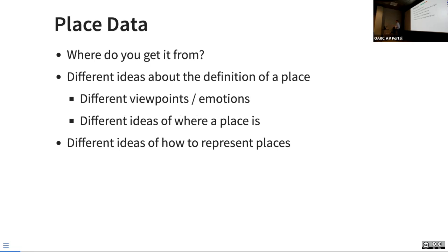Coordinates — but where do you get those from? Maybe you're walking around taking geolocated pictures of things. That's one place to get place data from. What other places would you get data about places from? The Getty Thesaurus of Geographic Names has a lot of place names in it. A census, satellite information, Google Maps — there are lots of data sources about places.